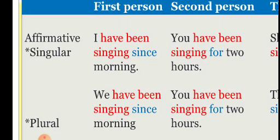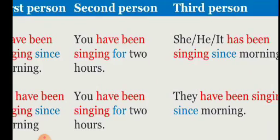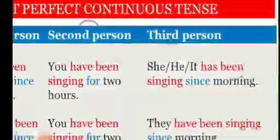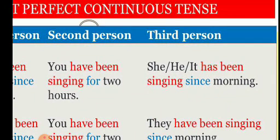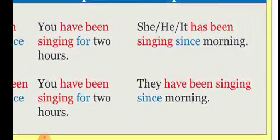For how many hours were they singing? They were singing for two hours. The action is still going on and may extend into the future. For third person singular: she/he/it has been singing since morning — structure: subject plus has plus been plus main verb plus -ing. For third person plural: subject plus have plus been plus base form plus -ing.